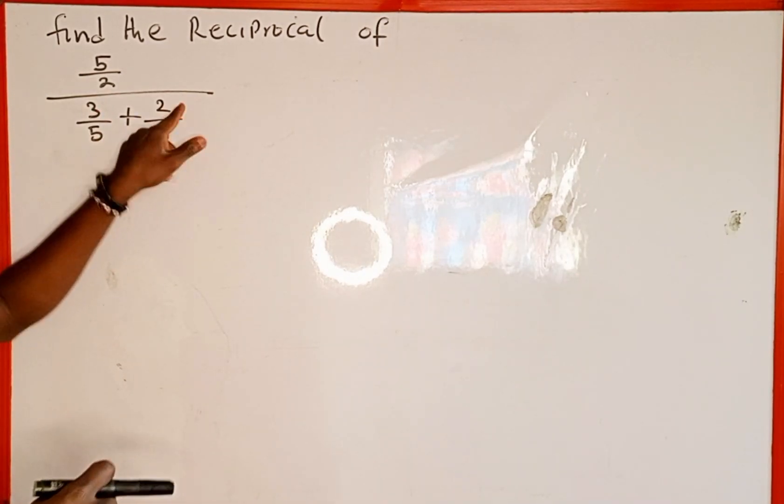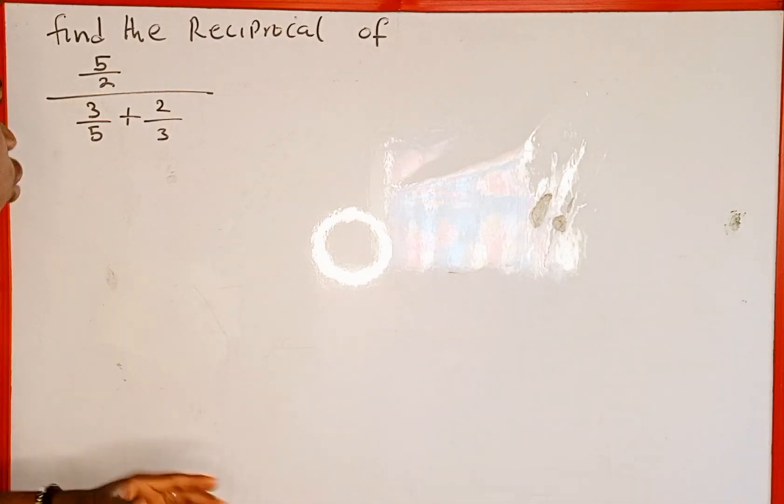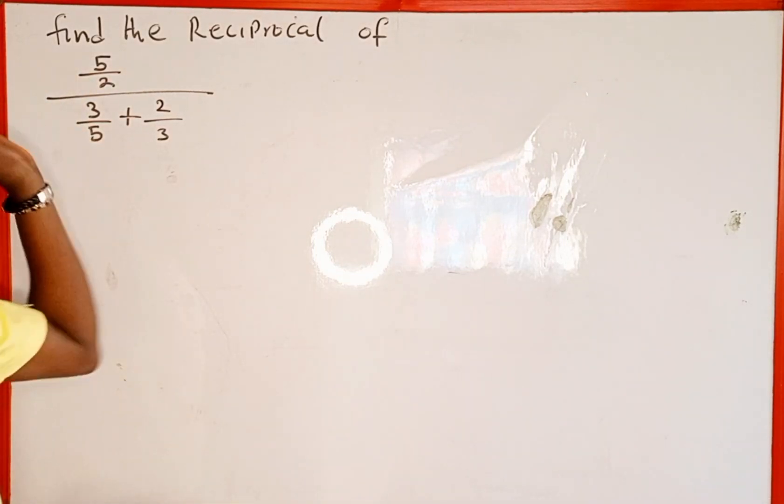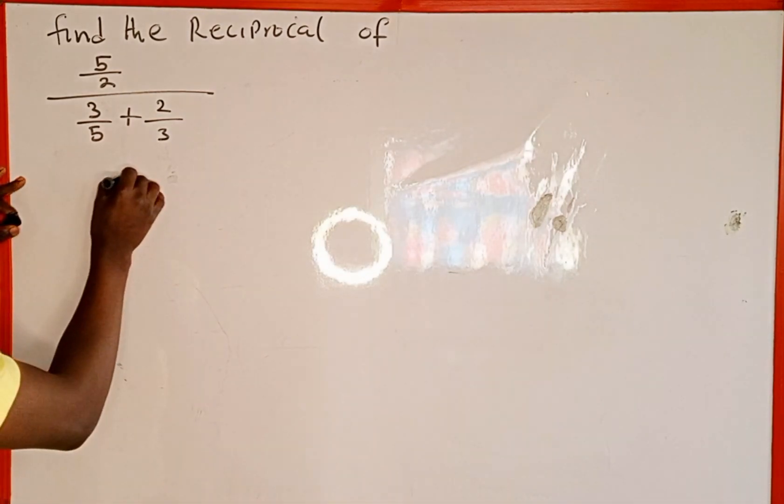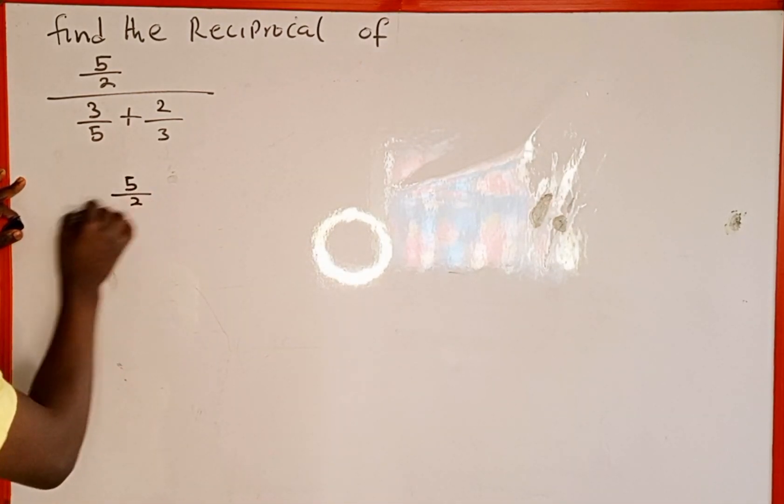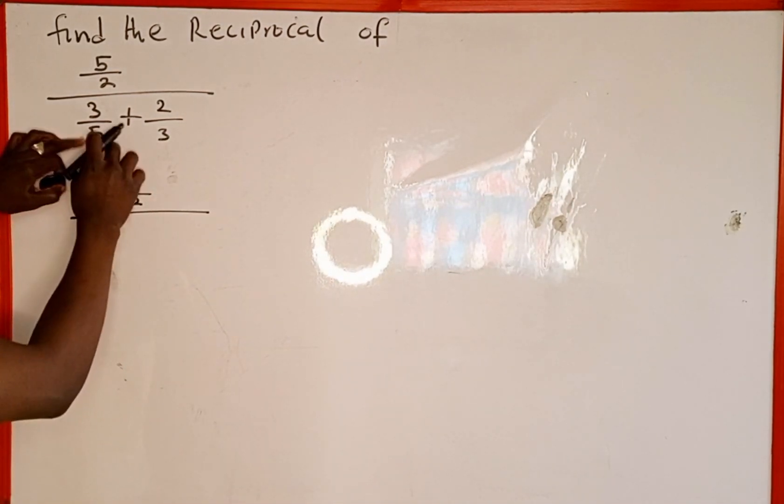The first thing we're going to do is to first simplify before we find the reciprocal. So this is the same as 5 over 2 divided by, and we're going to simplify this denominator first.